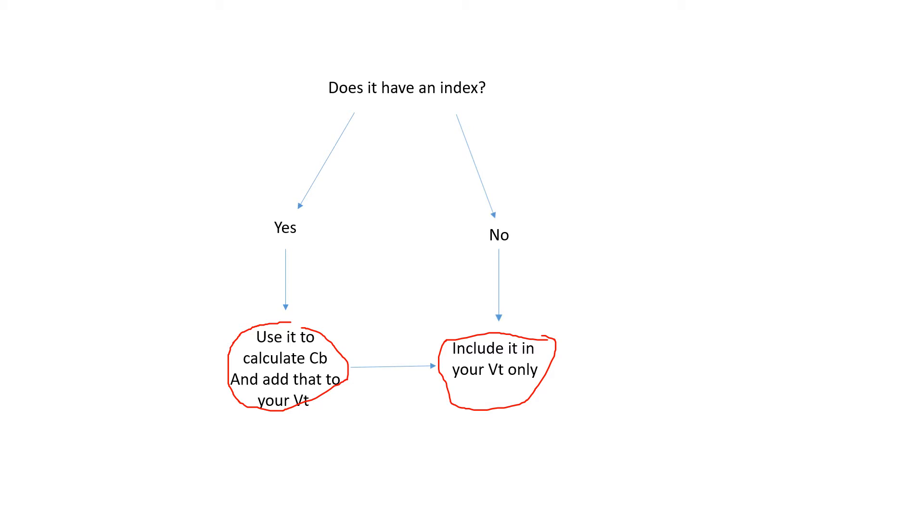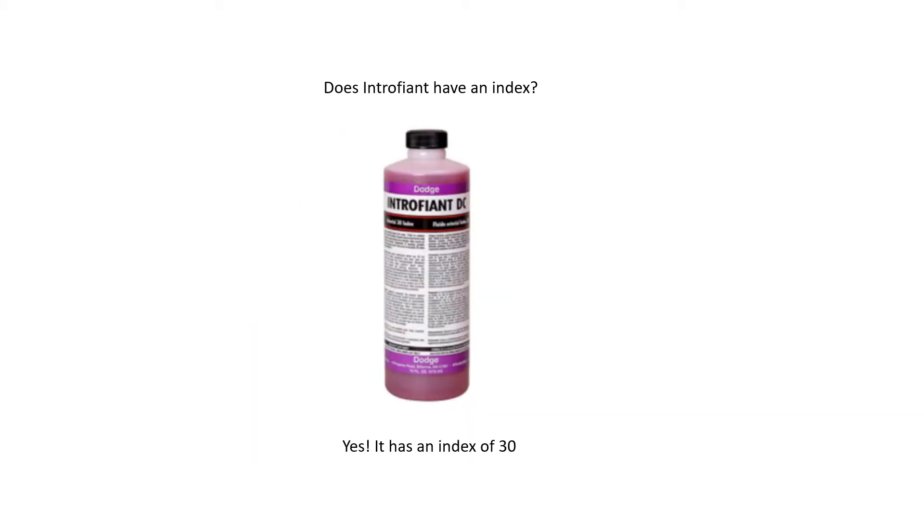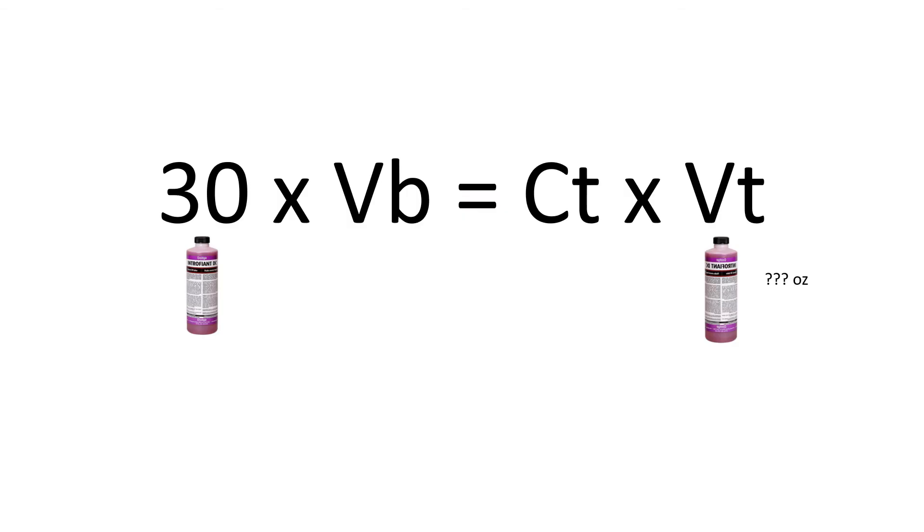Let's take a look at the fluids that we have here. First off, we have Intrafiant. Does Intrafiant have an index? Yes, it does. Intrafiant is an arterial fluid that has an index of 30. So where does it go then? We have to put it in our CB because we know that it has an index of 30, and that's where this belongs. And then we are going to add it to our total volume.